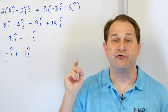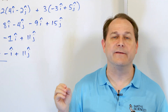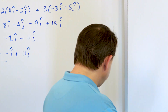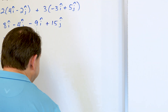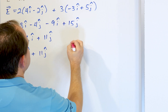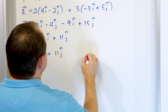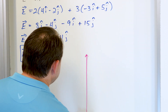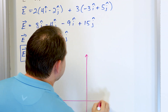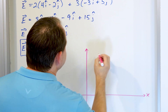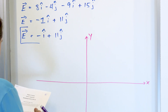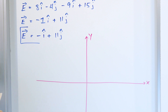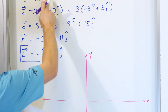Part B says draw vectors A, B, and E on the same coordinate axis. Let's go ahead and do that on this board. We'll draw an X-Y axis. Your sketches don't have to be perfect — you're just trying to extract whatever knowledge we can. The largest number we have here is 11, so all these numbers are less than 11.